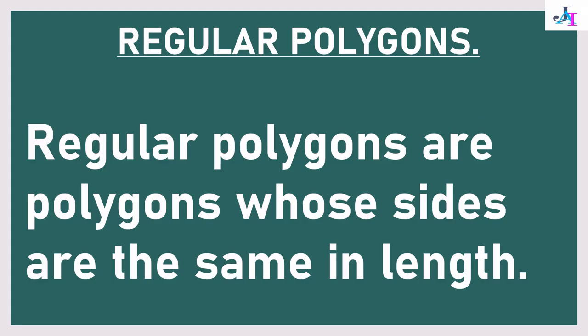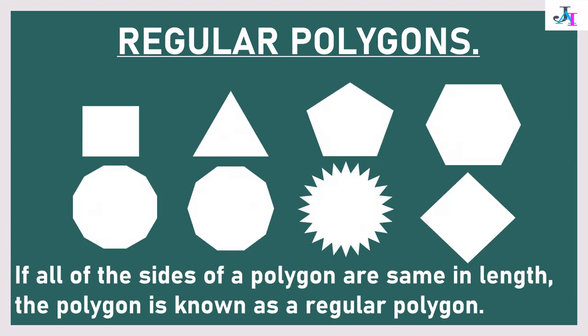Regular polygons are polygons whose sides are the same length. If all the sides are equal and the same length, the polygon is known as regular. Let's take a look at some regular polygons.